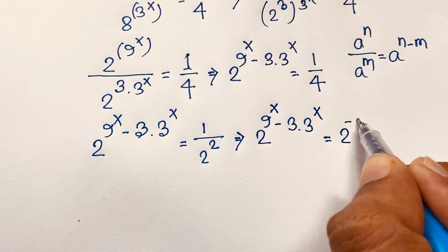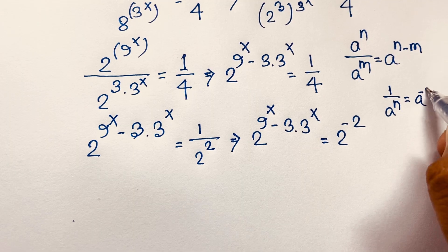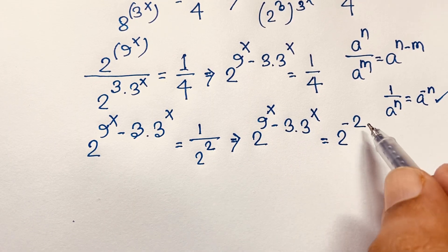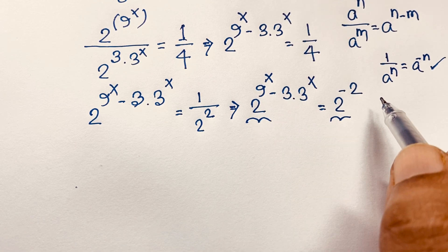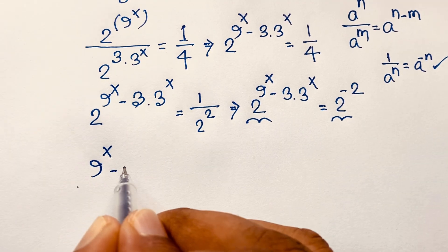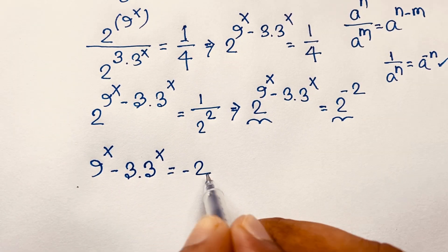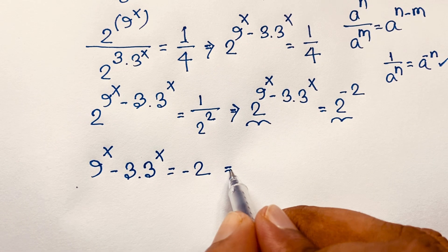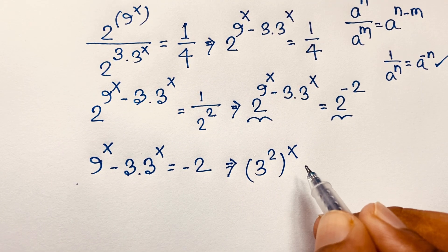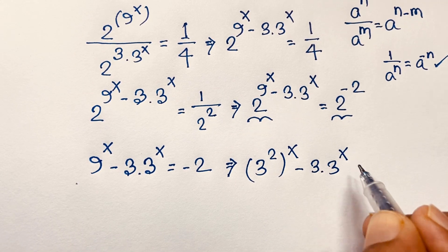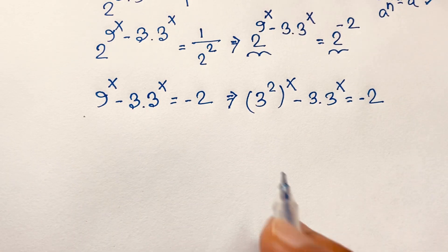According to the exponential formula, 1 over 2^2 equals 2 to the power minus 2. Both sides have base 2, so the exponents are equal: 9x minus 3 times 3^x equals minus 2. Now, 9 can be written as 3 to the power 2, so we have 3 squared bracket power x, minus 3 times 3 to the power x, equals minus 2.